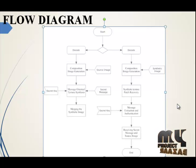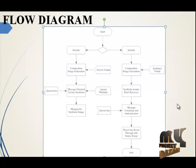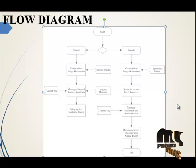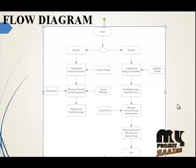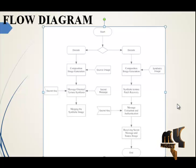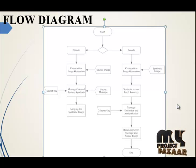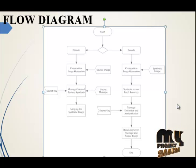In the encoding phase, there is a composition image generator which gets input from the user as a source image. That source image is split into a particular number of patches. The system will find the minimum error value of patches, in which the secret message is synthesized into that particular patch. Then all the patches are merged as a synthetic image.